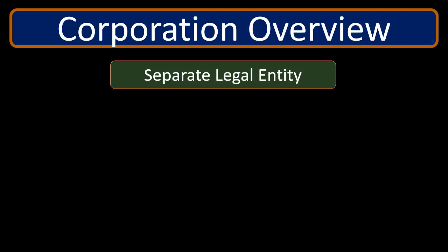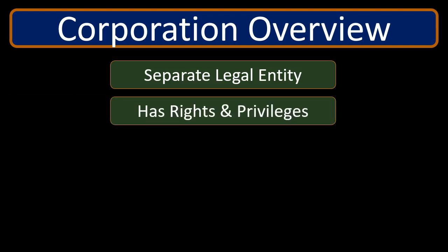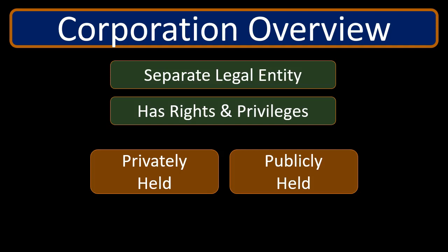Being a separate legal entity means the corporation has been given certain rights typically only given to individuals, such as the right to own property and the responsibility to pay taxes. A major benefit is that because the corporation actually owns property itself, when you sue a corporation or if they have liability problems, you're going after that corporate entity and not necessarily the owners. So it provides liability protection — the corporate entity has rights, privileges, and responsibilities of its own.